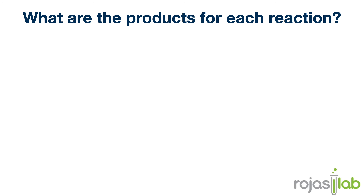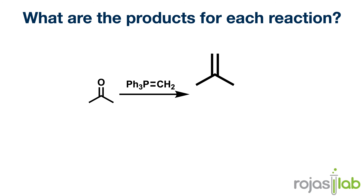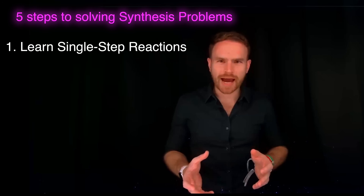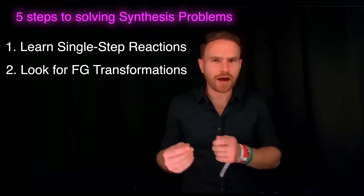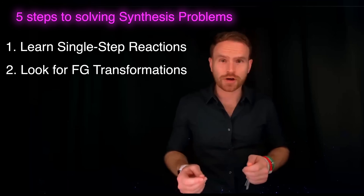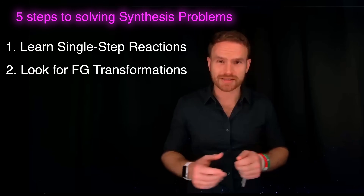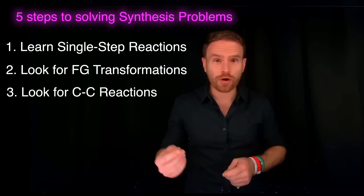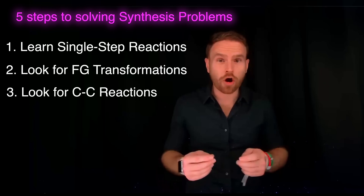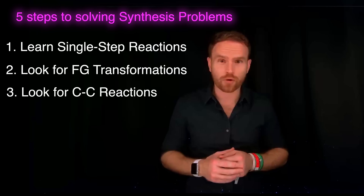Friedel-Crafts alkylation and acylation reactions are fantastic strategies to extend carbon chains when one of the reactants is a benzene derivative. And finally, the Wittig reaction is a useful strategy to make new carbon-carbon bonds, specifically when one of the reagents is a ketone or an aldehyde. So once you know all the reactions, you can identify what functional group transformation needs to occur, and then build larger and more complicated molecules by extending carbon chains with carbon-carbon bond-forming reactions.